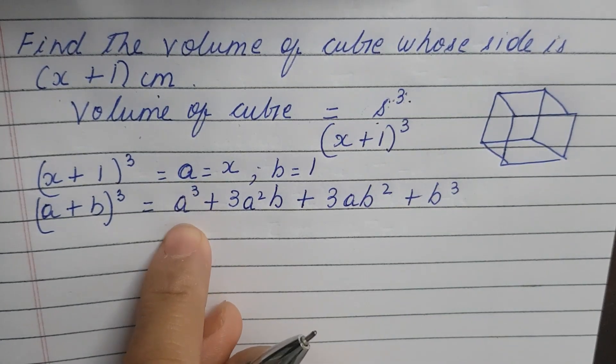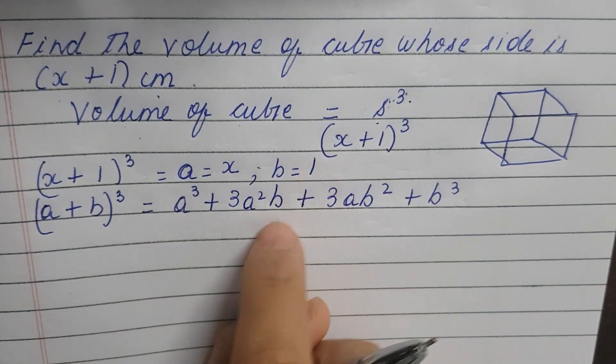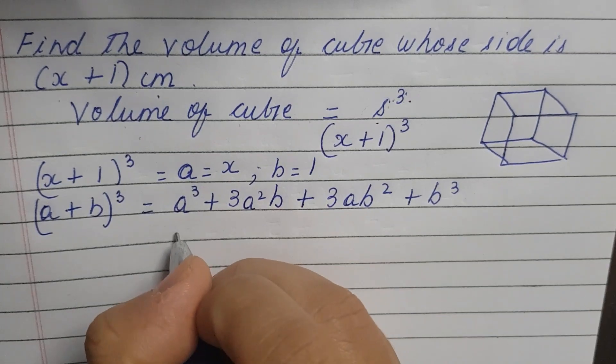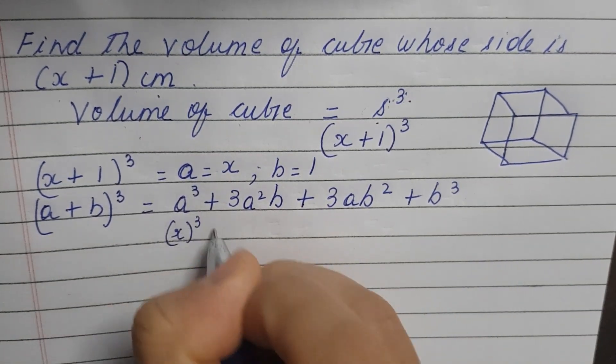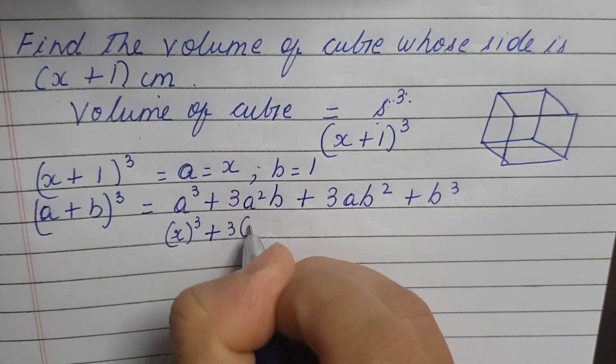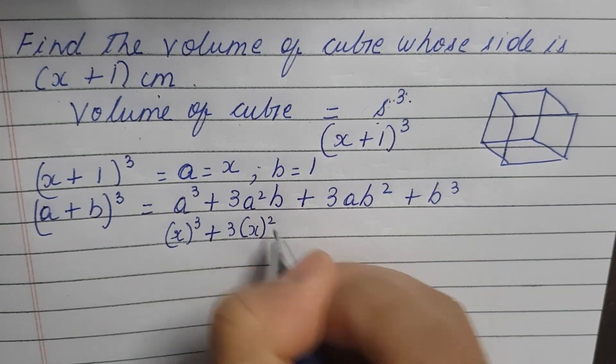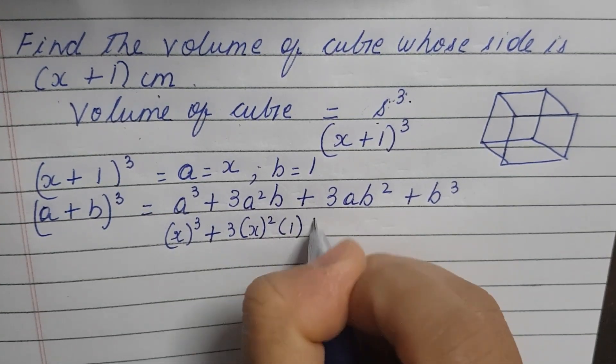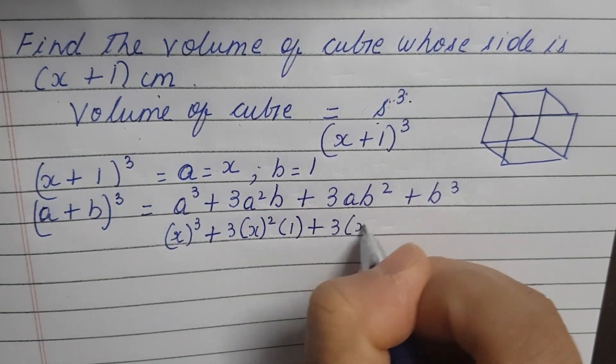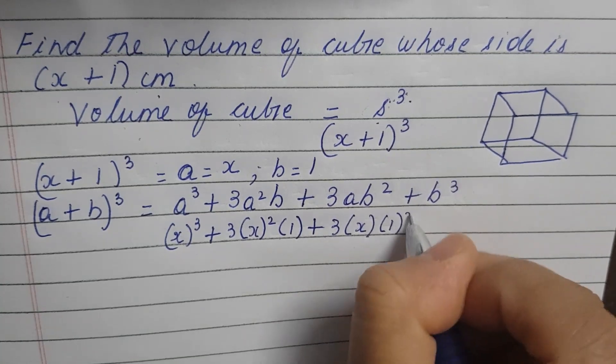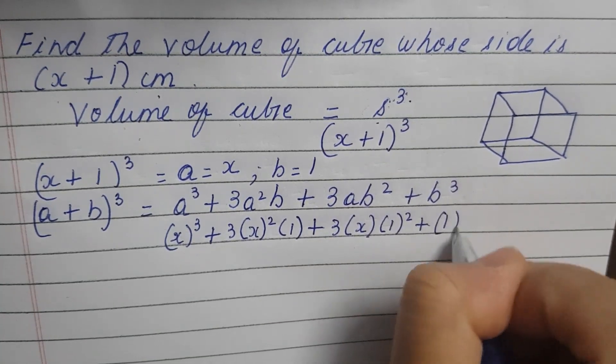So a and x substitute. b and 1 substitute. So, x³ plus 3 into x² into 1 plus 3 into x times 1 to the power 2 plus 1 to the power 3.